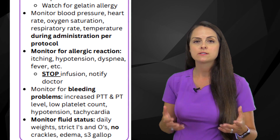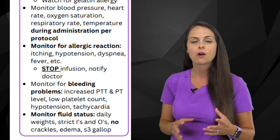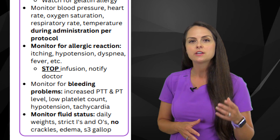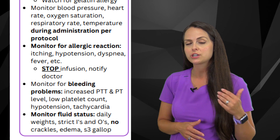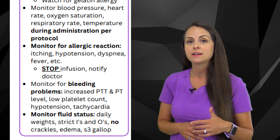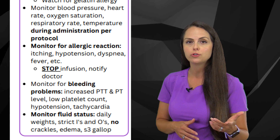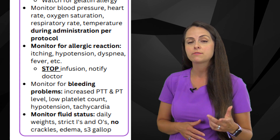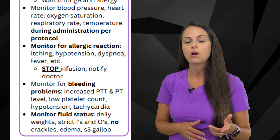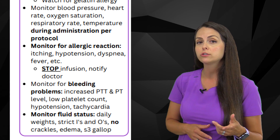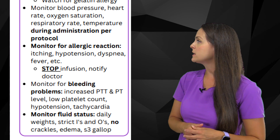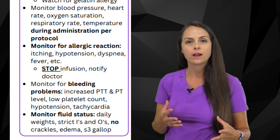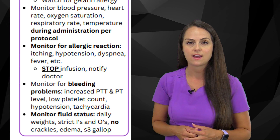Your patient is also at risk for bleeding problems due to coagulation issues that can arise with colloids. Monitor their lab work for potential bleeding problems — look at PTT results, which would be increased if there's an issue, and also monitor platelet count, which could drop. If they're experiencing hypotension or tachycardia, that can indicate a bleed somewhere and should be further investigated.